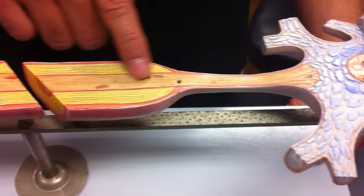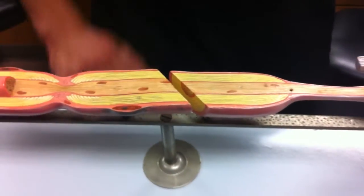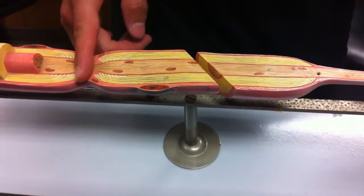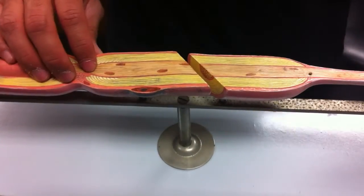Your axon continues on. It's being surrounded by the Schwann cells or myelin sheath. You have your nodes of Ranvier in between which help speed up the signal.